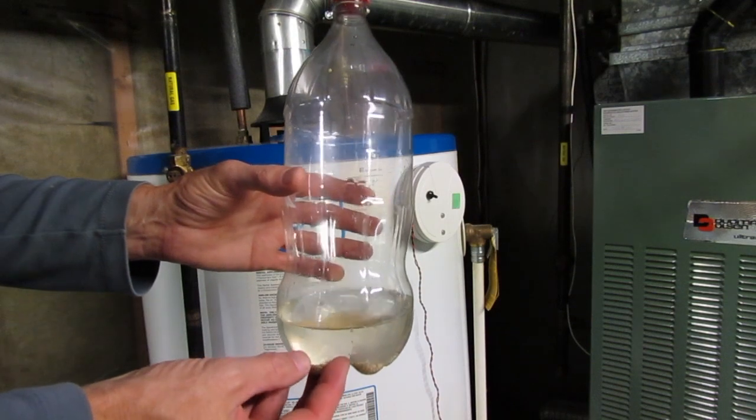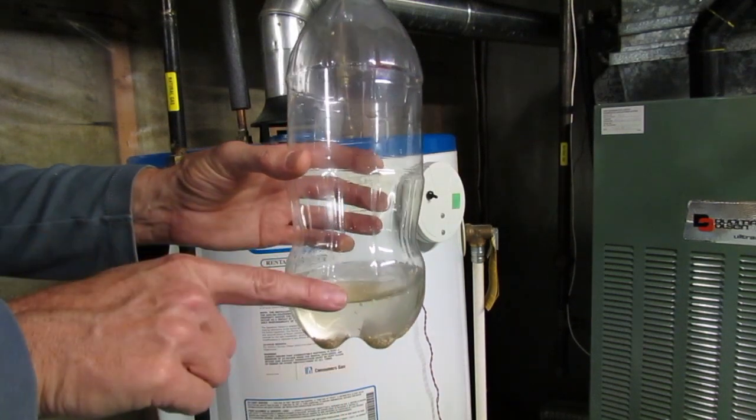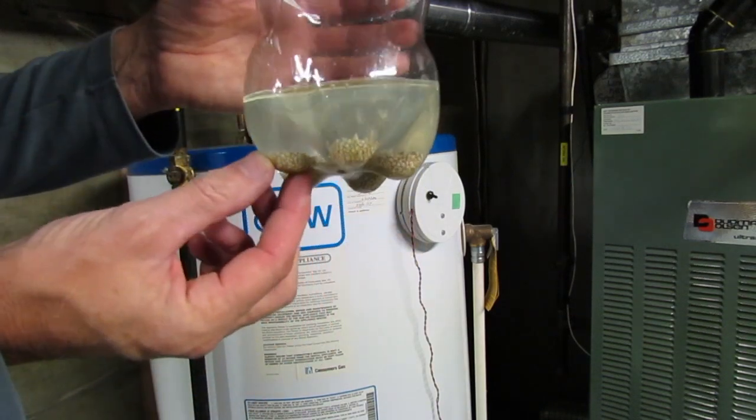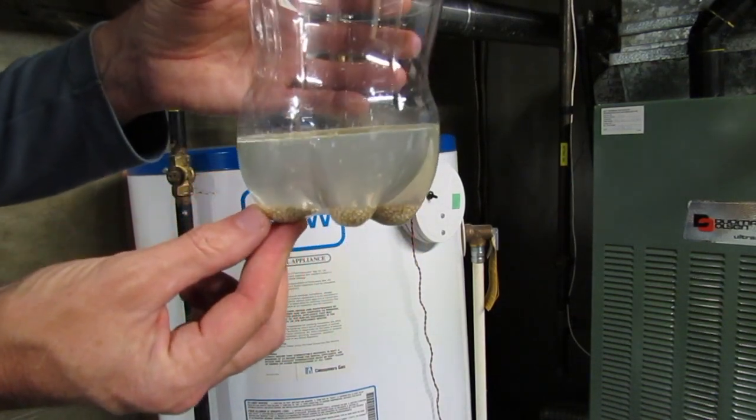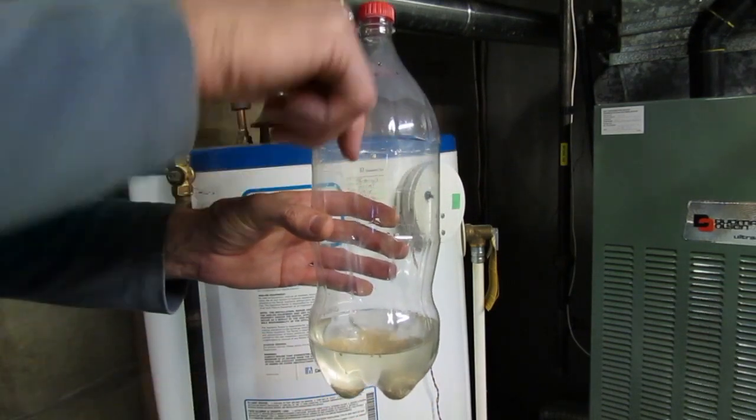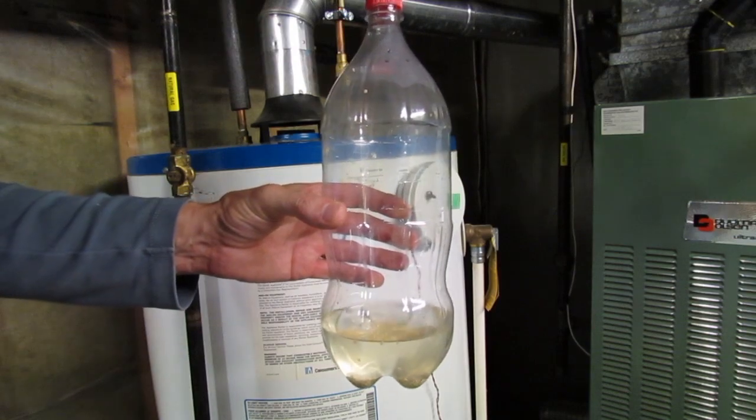So again using the pop bottle as an example there's the water in the hot water heater down to that level now. And I've got some quinoa in there and you can see how it represents the sediment that's sitting in the bottom. So let's get that stirred up by turning the valve back on for the hot water heater and blasting it down to the bottom and getting it all stirred up and getting more out of it.